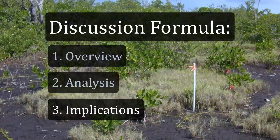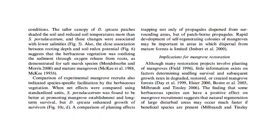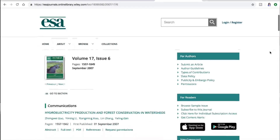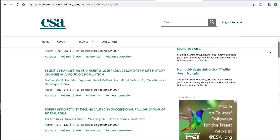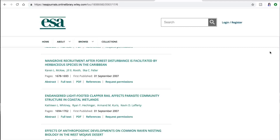The final section of the discussion should wrap things up — for example, by pointing out the implications of the work or any applications. In my example, I ended the discussion with a section called 'Implications for Mangrove Restoration,' in which I pointed out how future work could build on ours. In deciding on a structure for your discussion, it helps to look at other papers published in your target journal. Spend some time reverse engineering their discussions by outlining each one, which will reveal the hidden structure.